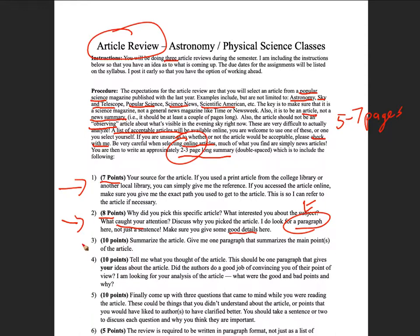Then come the three big sections — the heart of the review. First is the summary: I'm looking for one to two paragraphs that cover the main points of the article. I don't need three pages of exhaustive detail — just hit the high points and tell me what the article was about.